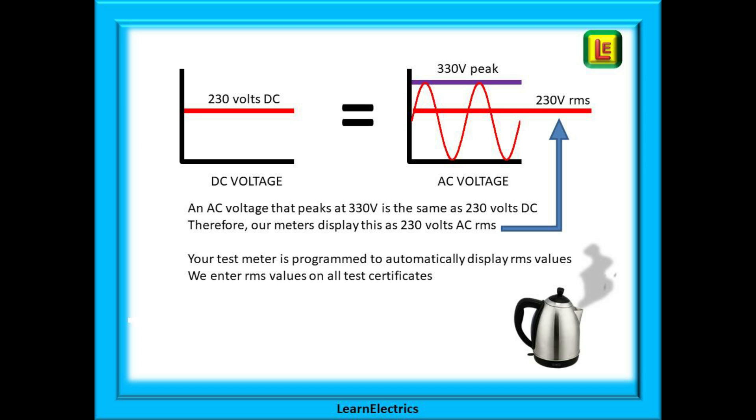Therefore, our meters display this as 230 volts AC RMS to avoid confusion with the peak voltages. Your test meter is programmed to automatically display RMS values, and we enter RMS values on all test certificates.